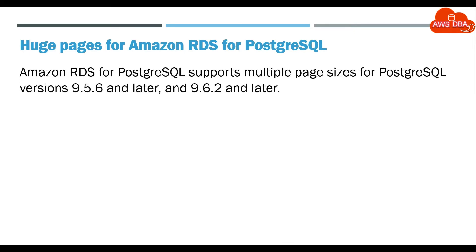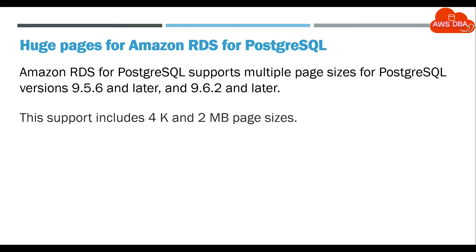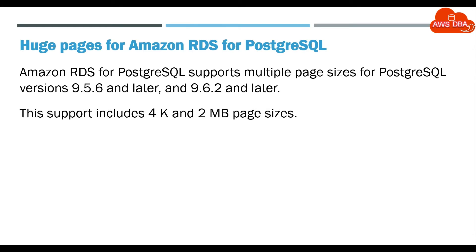Amazon RDS for PostgreSQL supports multiple page sizes for PostgreSQL versions 9.5.6 and later, and 9.6.2 and later. This support includes 4K and 2MB page sizes.